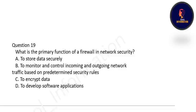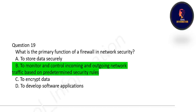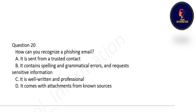Next question: what is the primary function of a firewall in network security? Is it to store data securely, or to monitor and control incoming and outgoing network traffic based on predetermined security rules? The correct option is B — a firewall monitors and controls incoming and outgoing network traffic based on predetermined security rules.